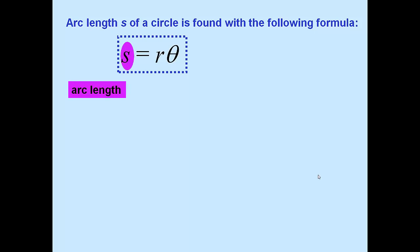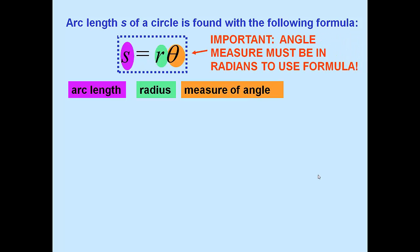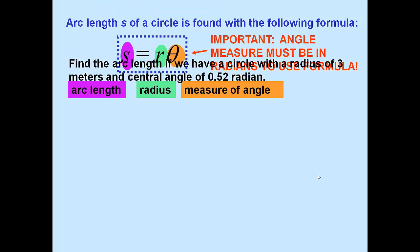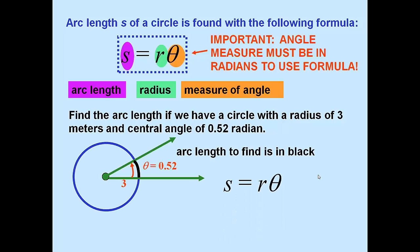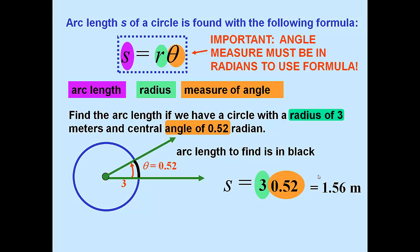Breaking that down: s is the arc length, r is the radius, and θ is the measure of the angle — and it's critical that θ be in radians. That measure must be in radians to use this formula. For example, a circle with a radius of 3 meters and a central angle of 0.52 radians: the arc length is r times θ, so 3 times 0.52, giving 1.56 meters.